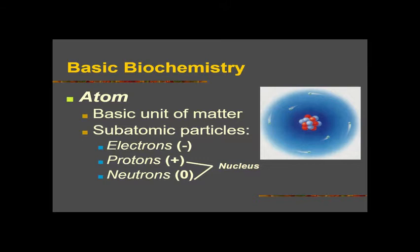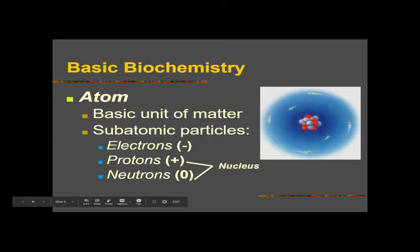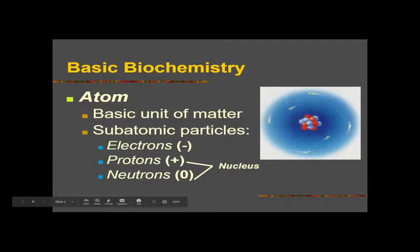An atom has three smaller parts called subatomic particles. There are electrons — electrons are negatively charged, the smallest subatomic particle, and they are in constant movement around the outside of the atom. Protons and neutrons make up the nucleus, found together in the center of the atom. Protons are positively charged; neutrons are neutral and don't have any charge.